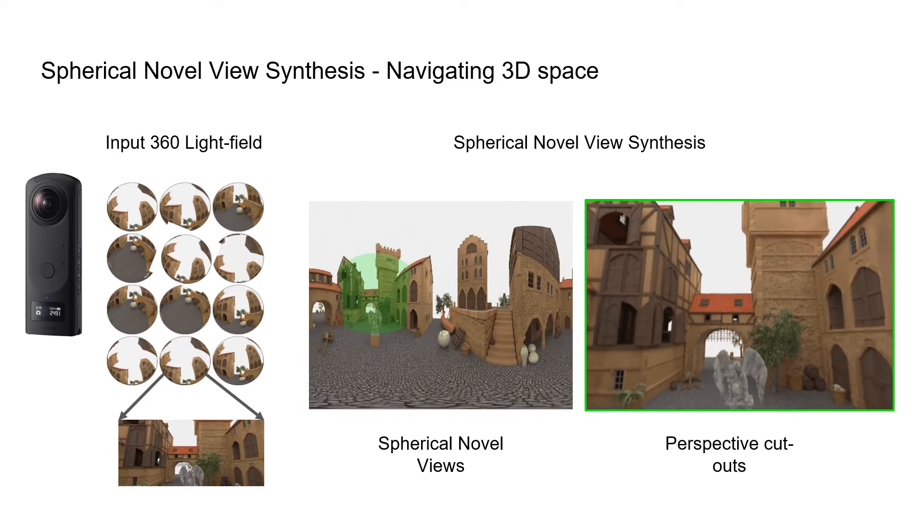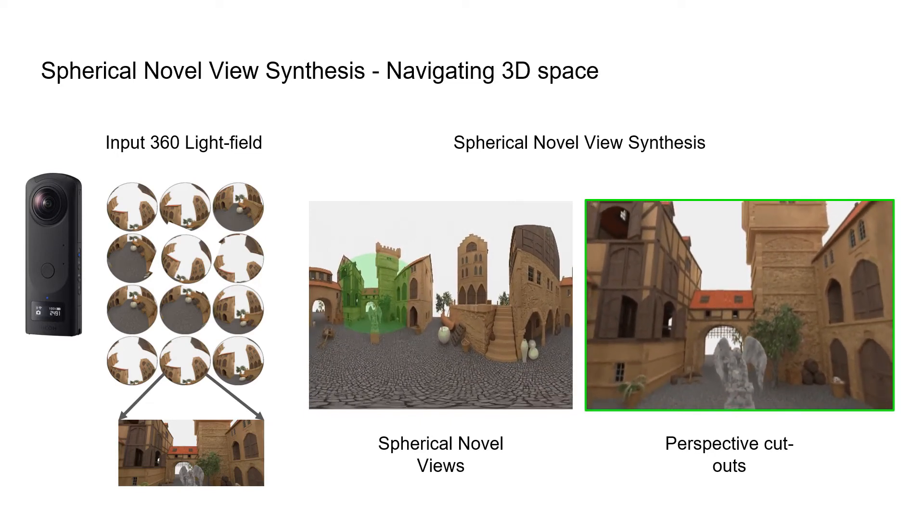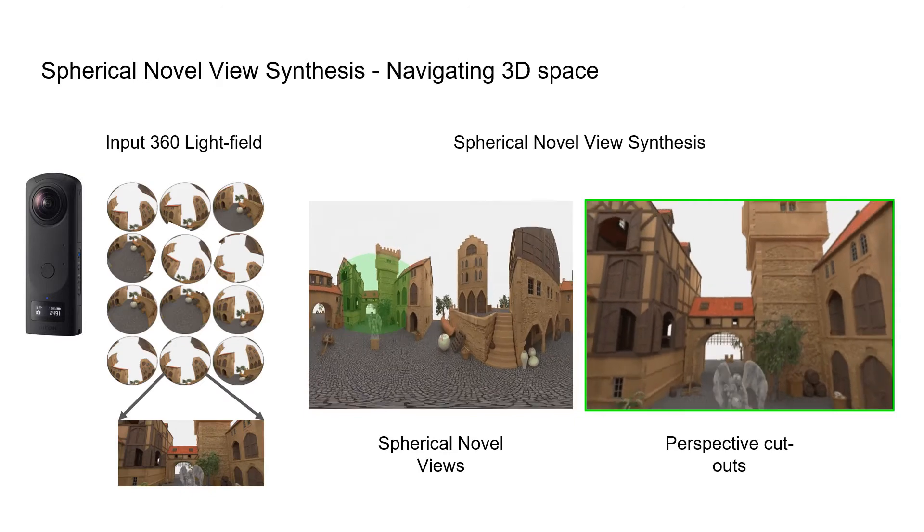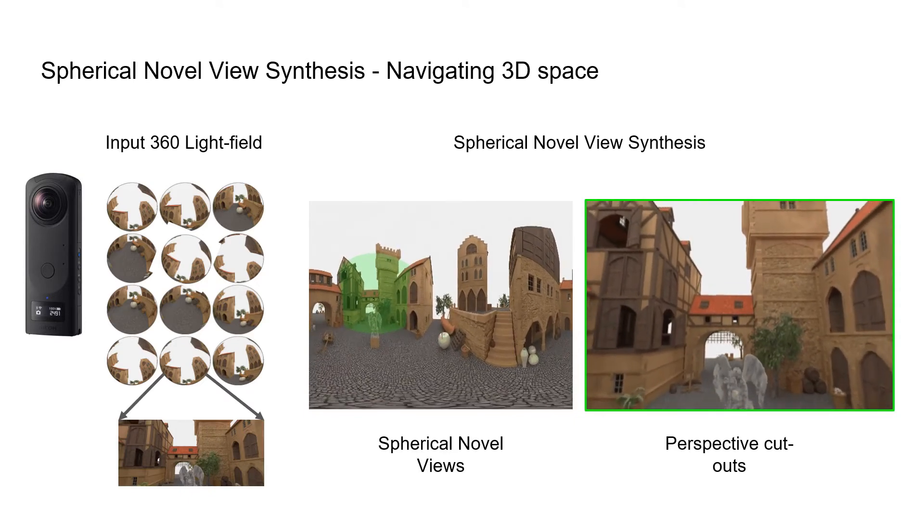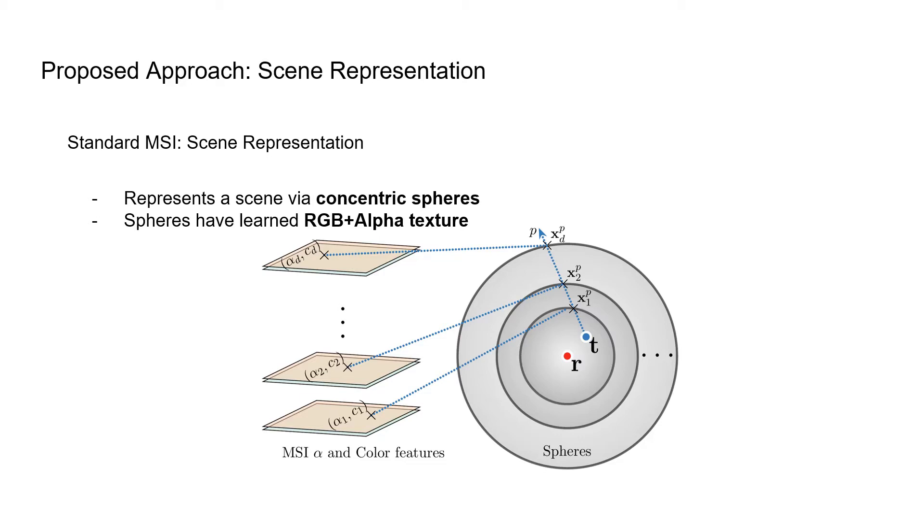Our work builds up on previous multisphere image-based view synthesis techniques. Let's start by reviewing how typical MSI-based view synthesis techniques work. The state-of-the-art MSI-based view synthesis method is Matryoshka. An MSI representation consists of concentric spheres with RGB and alpha texture maps. RGB and alpha maps are usually represented as equirectangular projections or ERPs.